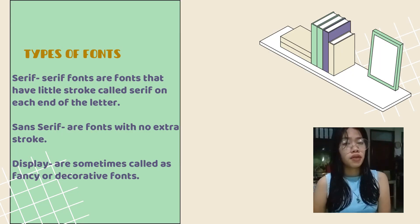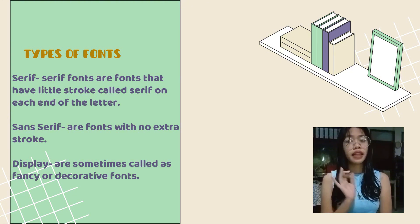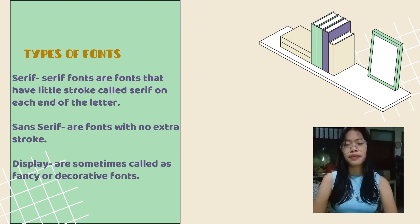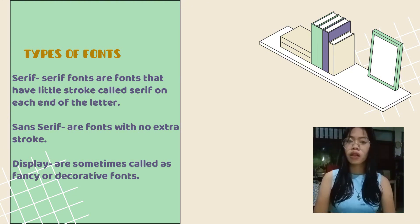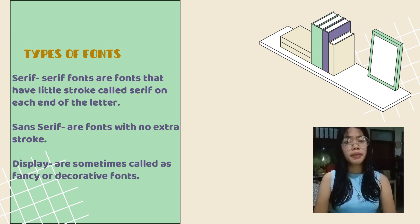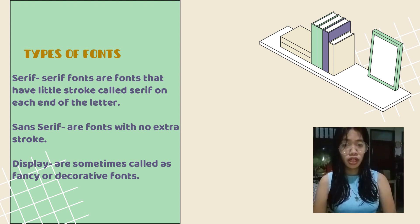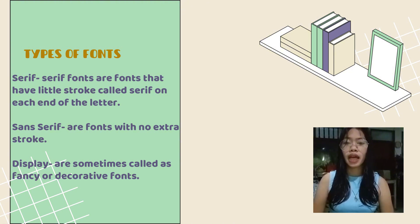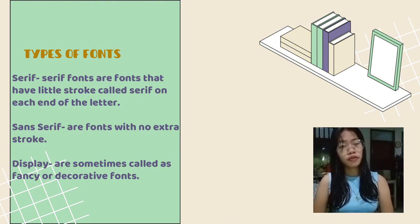Fonts can be categorized into three: serif, sans serif, and display. Serif fonts are fonts that have small strokes called serifs on each end of the letter. They are typically used in formal or traditional projects. Examples of typefaces with serif are Times New Roman, Baskerville Old Face, and Californian FB.